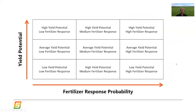Another way of thinking about this is in a matrix. We're used to thinking about yield potential zones — we've had access to yield data for well over a decade, and we've had access to NDVI imagery, which tends to delineate areas by yield potential in mid-season. But our brains have been geared to think in the context of yield-based zones, when really absolute yield potential doesn't determine fertilizer response, which is what we actually need to understand to provide an ROI with variable rate nutrients.